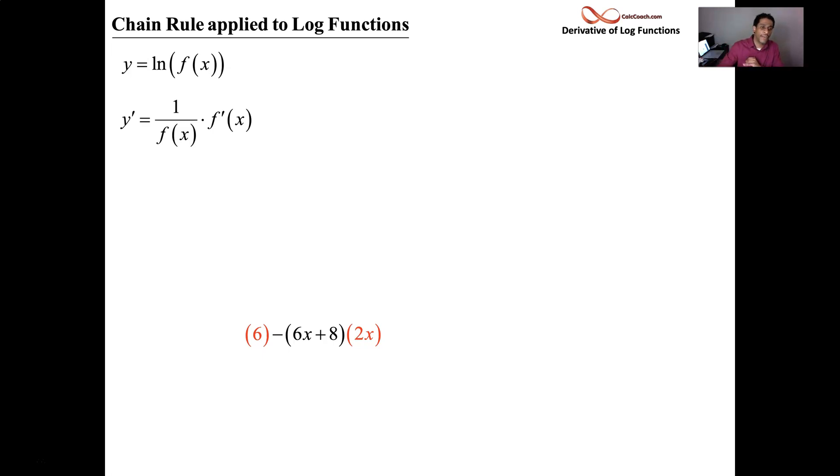Chain rule says don't stop there, though. We have to multiply by the derivative of the inside function. And you can put those into one fraction nicely: f prime over f. That's the derivative of the natural log of f of x.